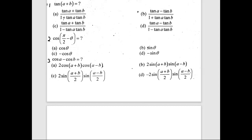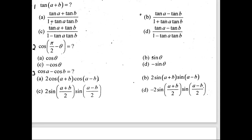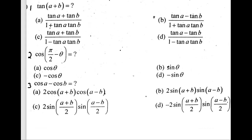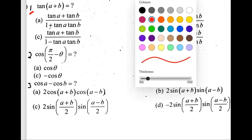Let's get started. The first question is: tan(a + b) equals what? This is basically a trigonometric identity where we know that tan(α + β) equals tan α plus tan β, divided by 1 minus tan α tan β.